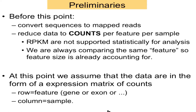Basically, the high-expressing genes will be fine; it's the low ones that will cause you trouble. Some people worry about the fact that longer genes are expected to get more reads at the same expression level, but since we're always comparing the same feature across samples — not different features in the same sample — we don't need to worry about that. If you need to compare features in the same sample, you probably do want to use RPKM, but then you may not want to do a formal statistical test.